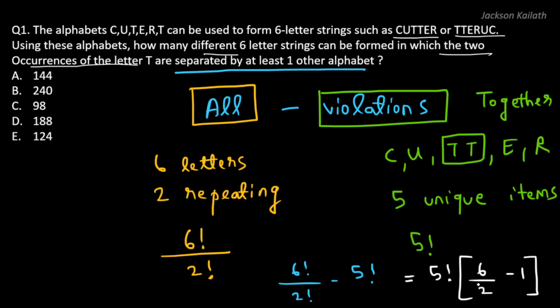Now let's simplify this. 5 factorial is equal to 120, and 6 by 2, that's equal to 3. So 3 minus 1, that gives us 2. So this is nothing but 120 times 2, which is equal to 240. And that is our answer, which is answer option B.